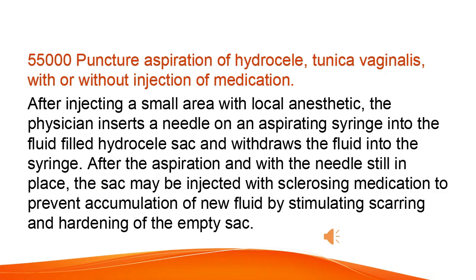Puncture Aspiration of Hydrocele, Tunica Vaginalis, With or Without Injection of Medication. After injecting a small area with local anesthetic, the physician inserts a needle on an aspirating syringe into the fluid-filled hydrocele sac and withdraws the fluid into the syringe. After the aspiration, and with the needle still in place, the sac may be injected with sclerosing medication to prevent accumulation of new fluid by stimulating scarring and hardening of the empty sac.